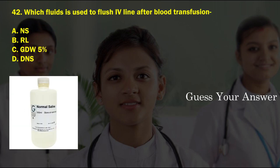Which fluid is used to flush the IV line after blood transfusion? Option A: NS, option B: RL, option C: D5W 5%, option D: DNS.